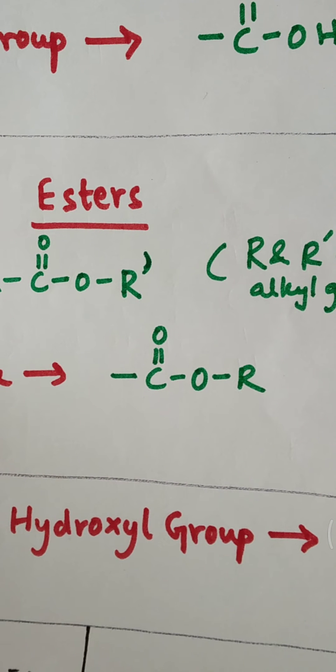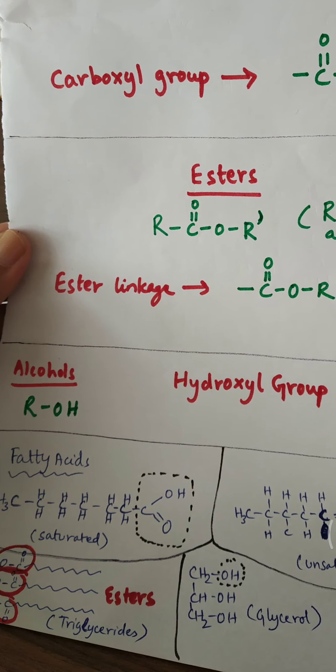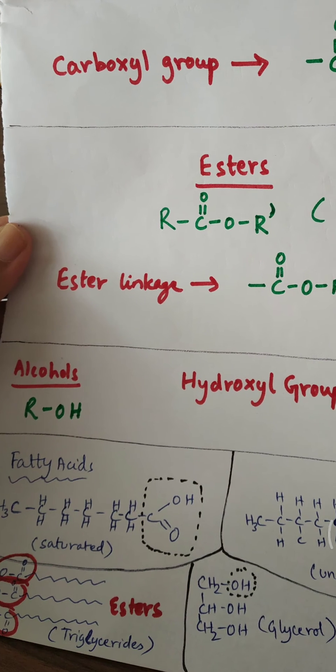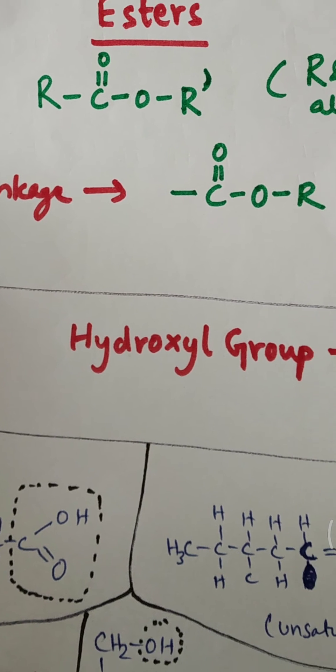The third type of functional group that you will find in fats and lipids is the alcohols. Alcohols in general are R-OH, but the alcohol group is actually called the hydroxyl group, which is bond OH.